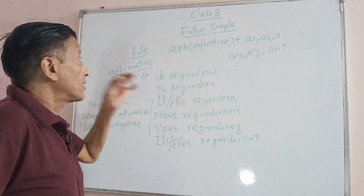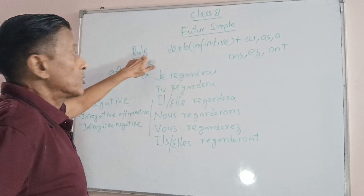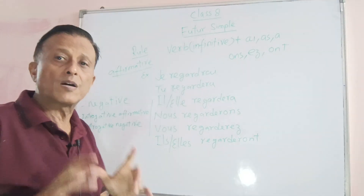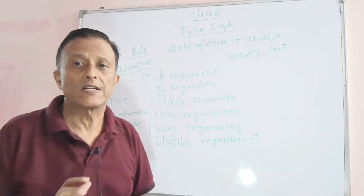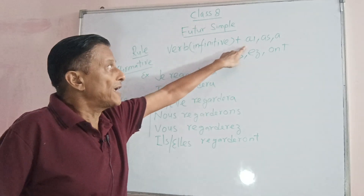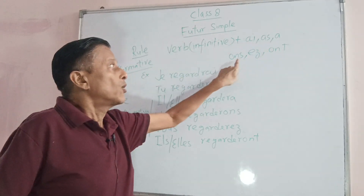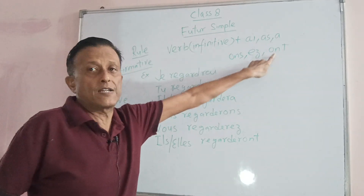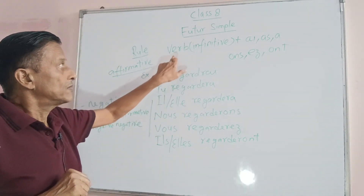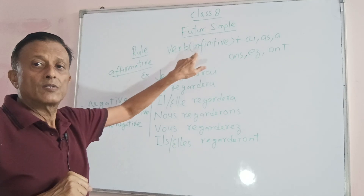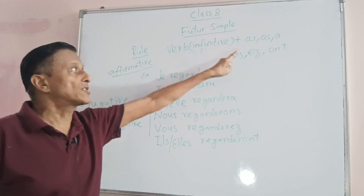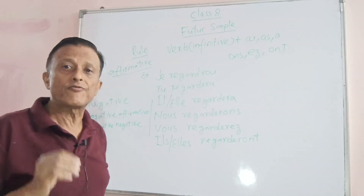Look at this rule. You take the verb infinitive — the complete verb without any conjugation — plus the endings: AI, AS, A, ONS, EZ, ONT. You take the full, complete verb and at the end you simply add these endings to make the simple future.